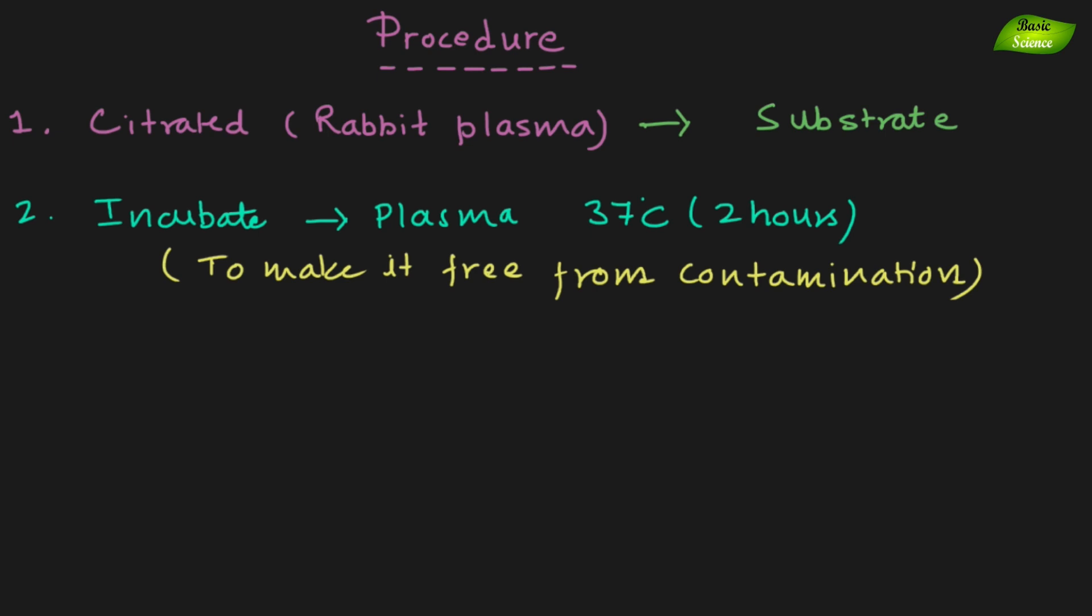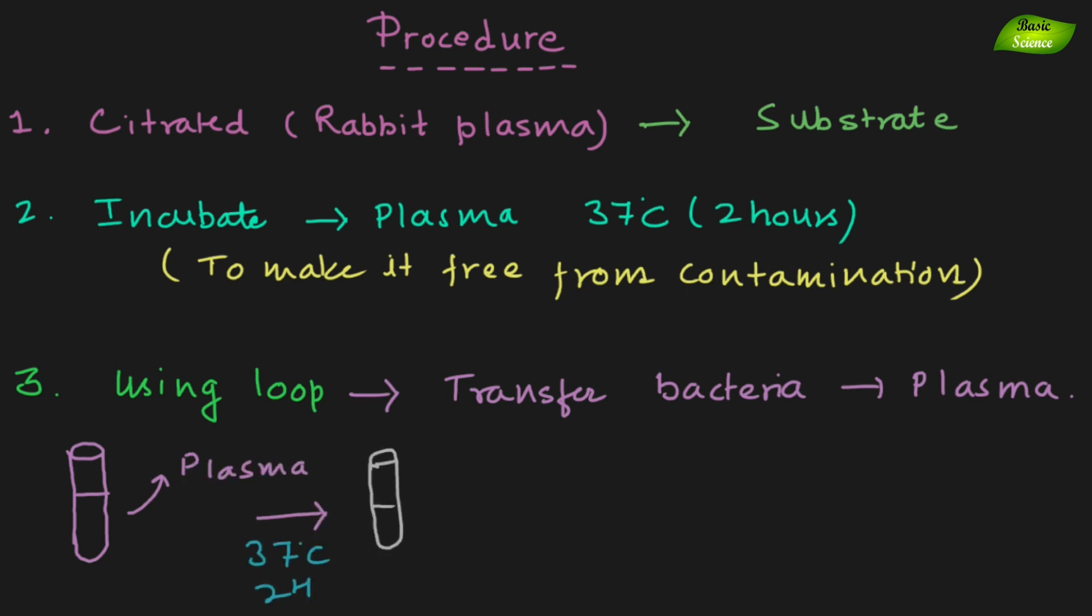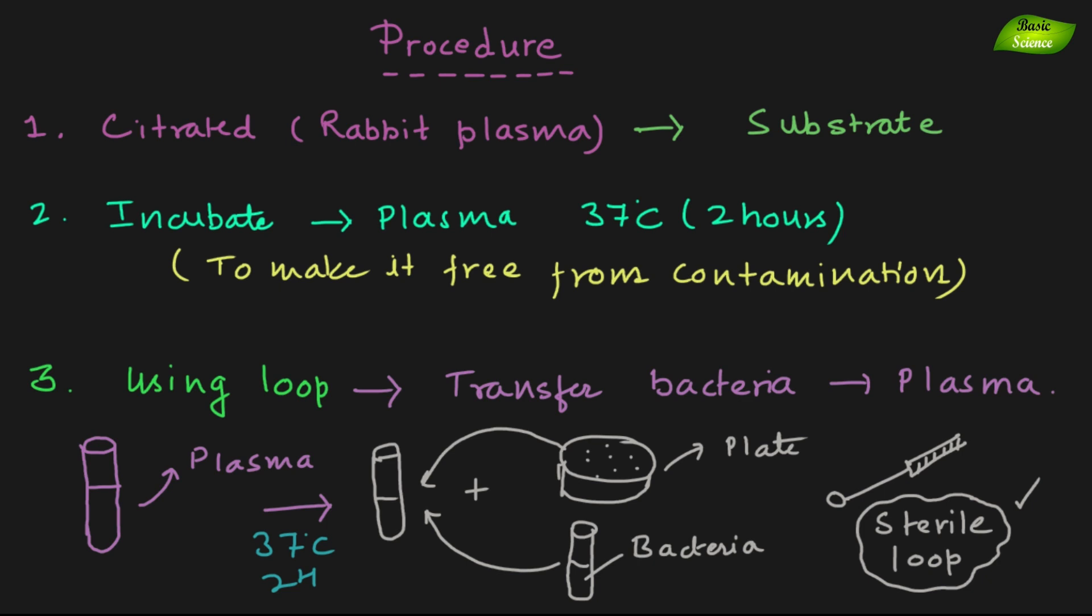Once it's done, using a bacteriological loop you can take the bacteria and transfer the bacteria into the plasma. You can transfer from solid colony or from liquid culture. You have plasma at 37 degrees for two hours, you have incubated and then you have added bacteria from any plate or from any liquid culture into the plasma. After that, that has been done by a sterile loop. After that you can incubate it and you can look for the formation of the clot.